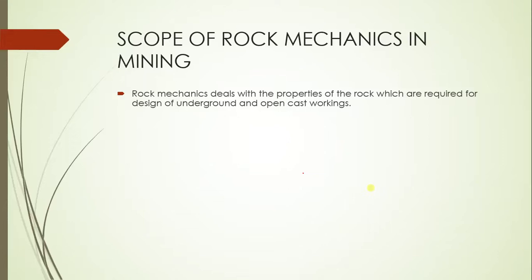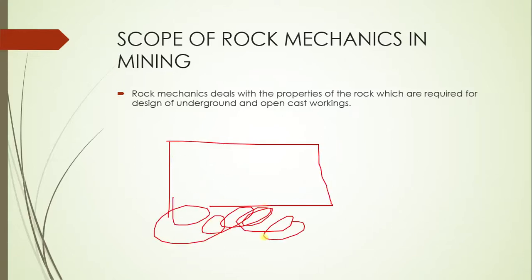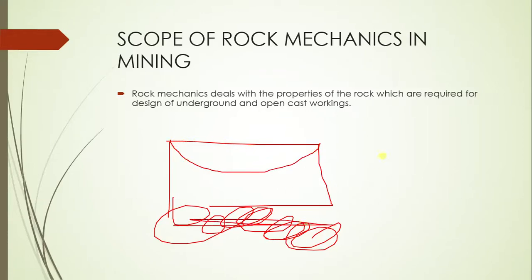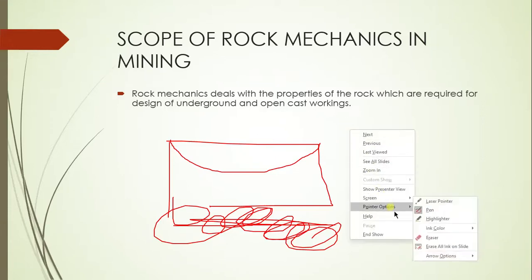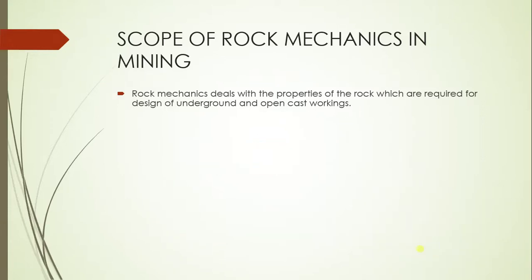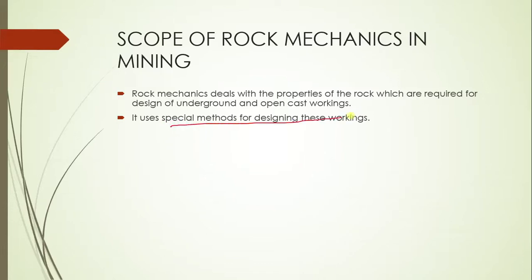We will also study subsidence. Subsidence is when you start excavating the bottom coal block, creating a cavity, and the surface above begins sagging and going inward. This surface settlement due to underground excavation is called subsidence, and we study that in rock mechanics as well.